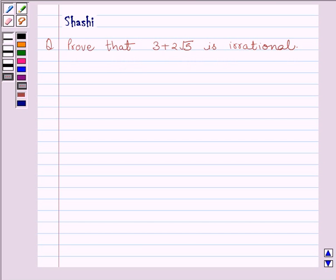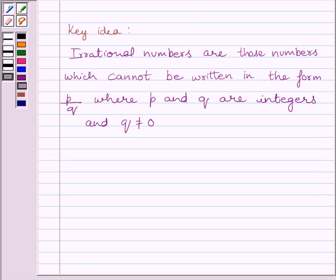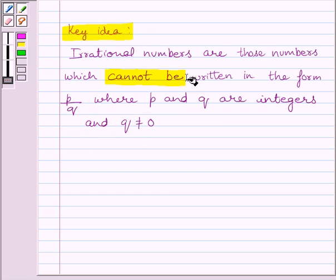First of all, let us understand what are irrational numbers. Irrational numbers are those numbers which cannot be written in the form P upon Q where P and Q are integers and Q is not equal to 0. This is the key idea to solve the given question.